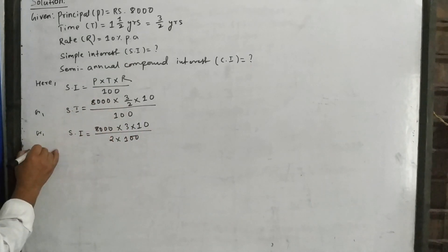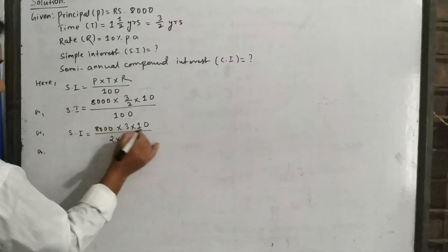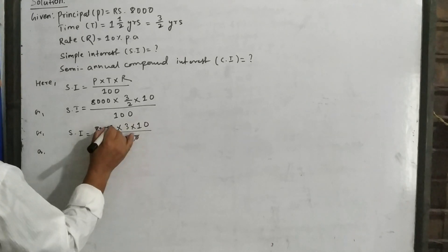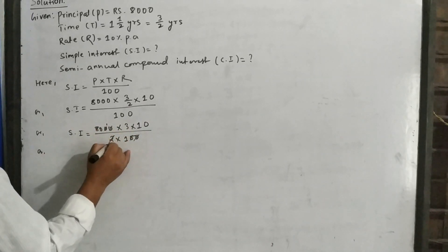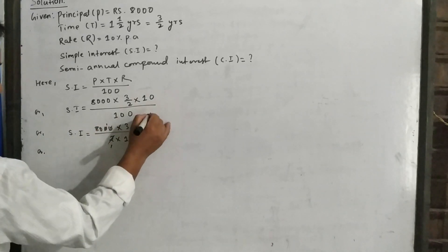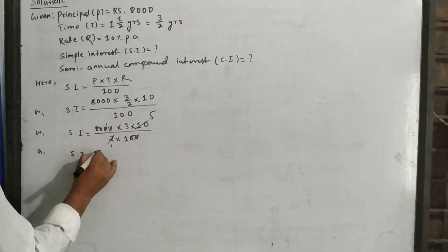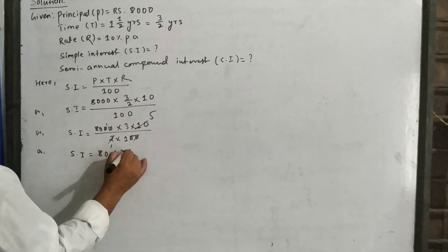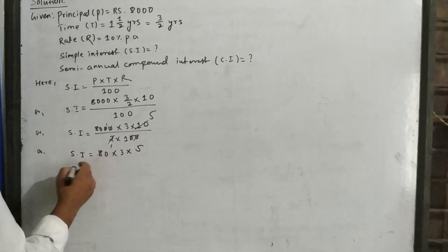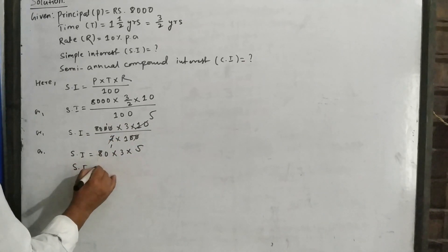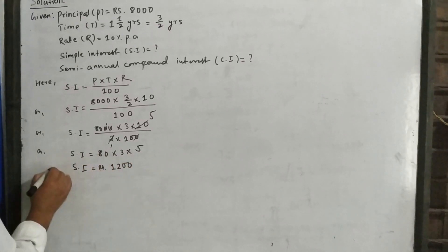Or simple interest = 8000 × 3 × 10 / (2 × 100). Since all are in multiplication form, two zeros from numerator and denominator can be cancelled. The remaining gives 80 × 3 × 5 = 1200. Therefore, simple interest equals rupees 1200.